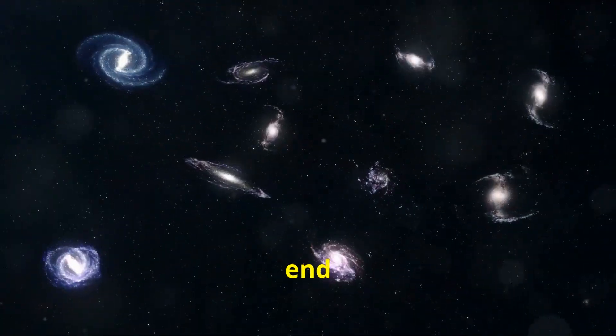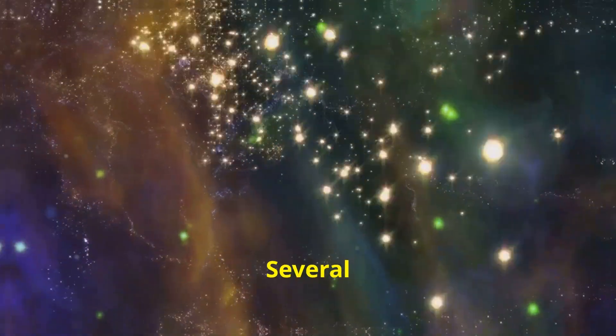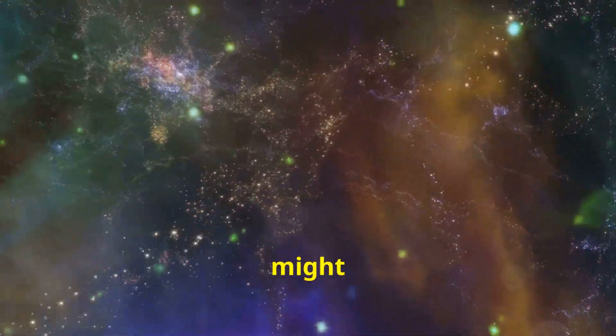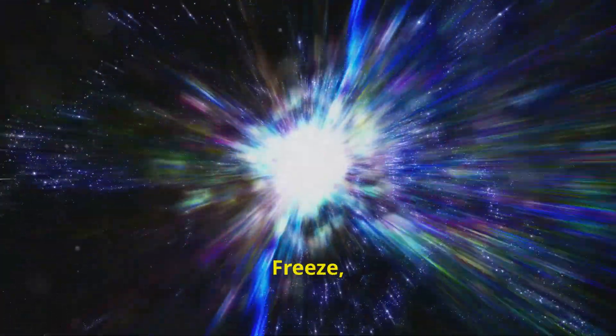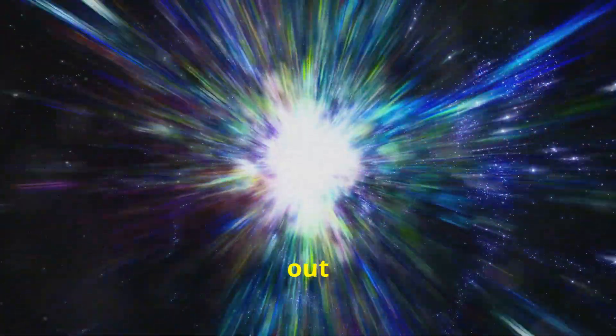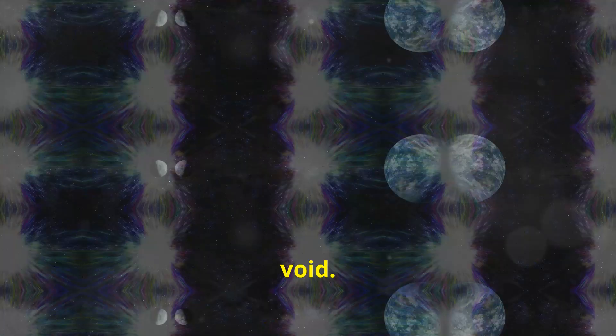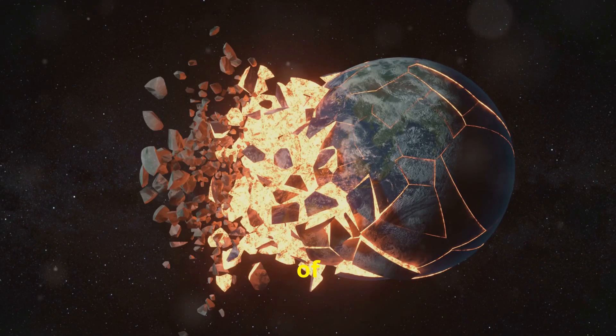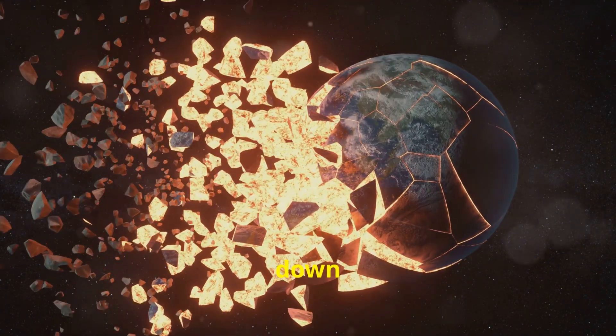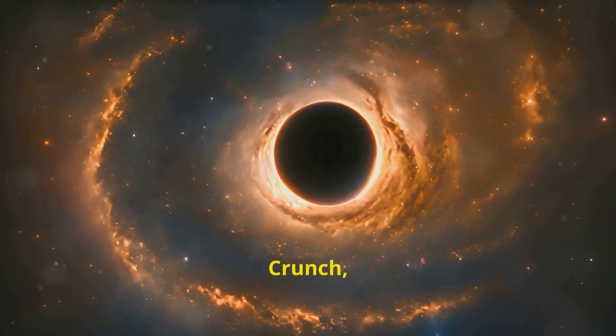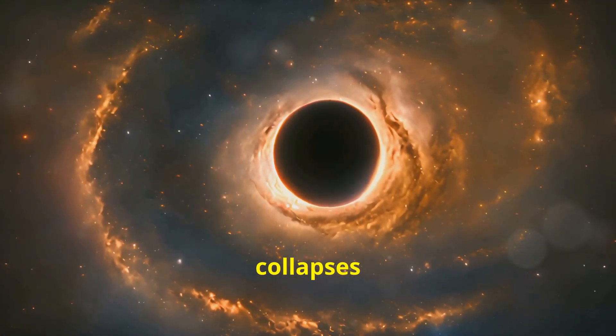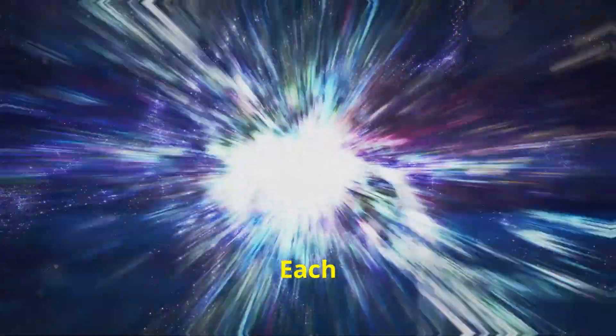Number 2, the end of the universe. Several theories predict how the universe might meet its end. The big freeze, where stars burn out and the universe becomes a cold, dark void. The big rip, where the expansion of the universe tears everything apart down to the atomic level. Or the big crunch, where the universe collapses in on itself.